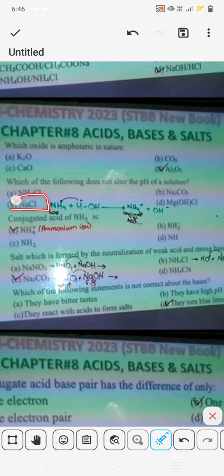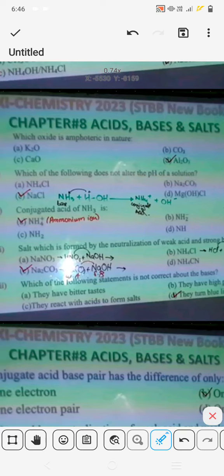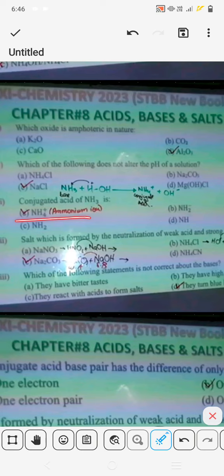If you have a conjugated acid of NH3, when you react with H+, then NH3 becomes NH4+ positive. NH4+ is the conjugated acid of NH3.